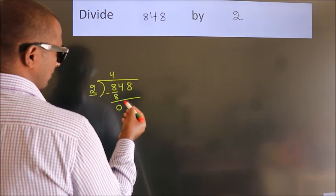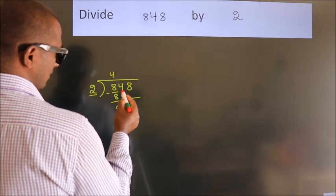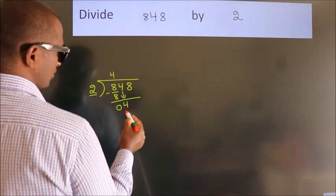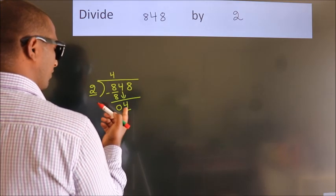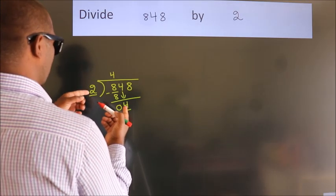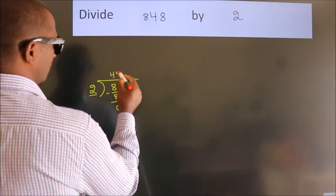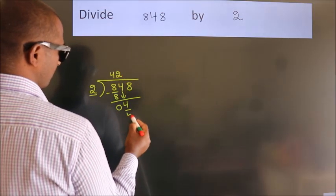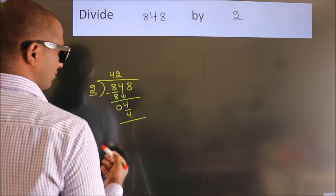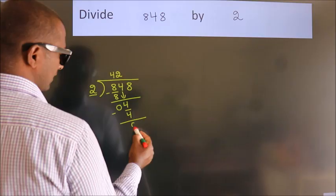After this, bring down the beside number, so 4 down, so 4. When do we get 4 in 2 table? 2 twos, 4. Now we subtract, we get 0.